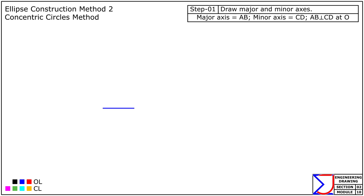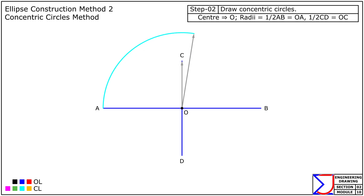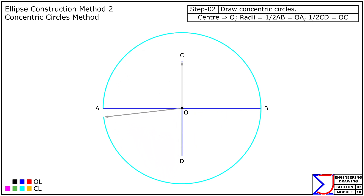First, draw the major axis AB and the minor axis CD of the specified lengths. Ensure that they bisect each other at right angles at the center point O. Next, with O as the center and radii equal to half the lengths of the major and minor axes respectively, draw two concentric circles — one larger and one smaller.